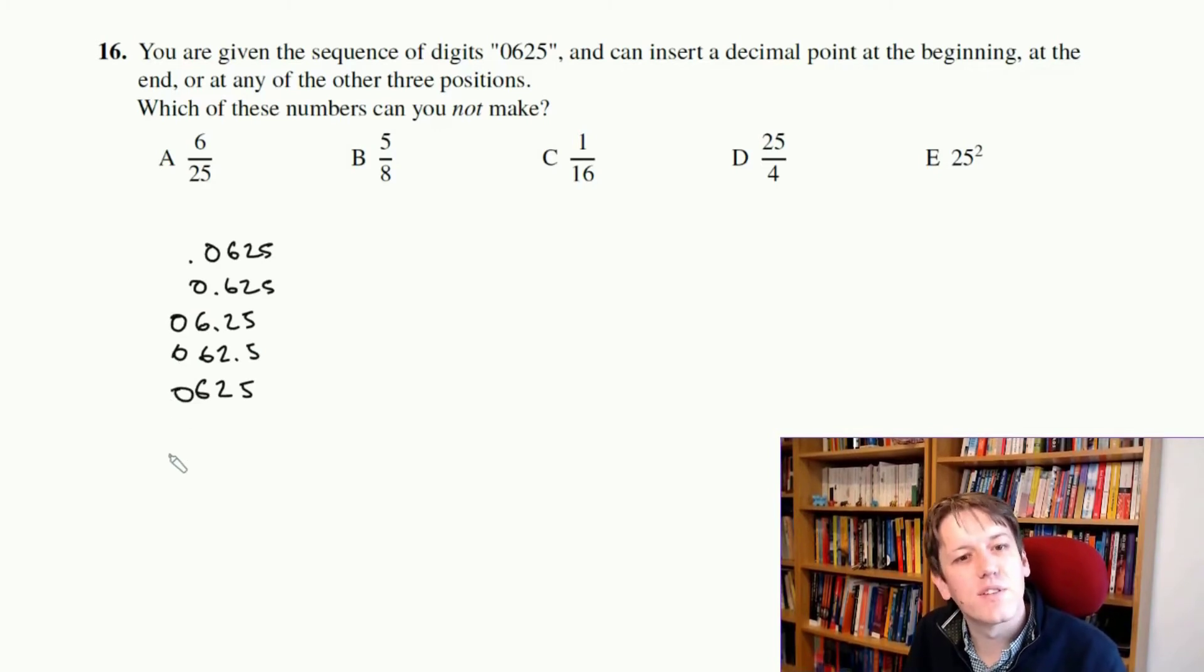You can think of there being zeros at the front here, but that would be all the possible options, and it says, which of these numbers can you not make? Well, if we go through them one at a time, 6/25ths, that would be 24 over 100, and so that's not any of these, so actually, I can just say that the answer is A.